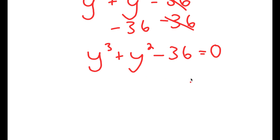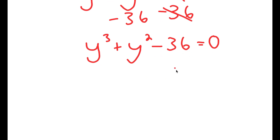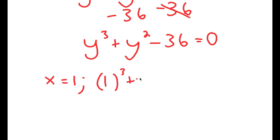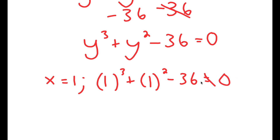To solve equations like these, we have to first find one solution to that equation and then use that one solution to find the remaining solutions. The only way to do that is to just plug in values and see if they work. So we're going to first plug in y equals 1. If y equals 1, we get 1 to the power of 3 plus 1 squared minus 36, which is equal to 2 minus 36, which does not equal 0.